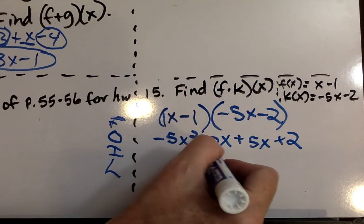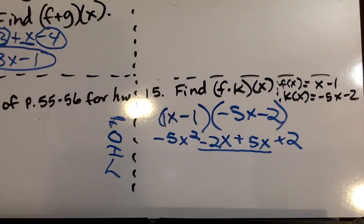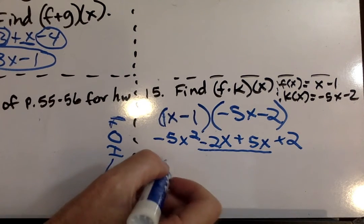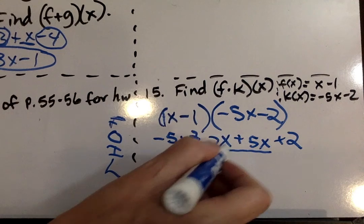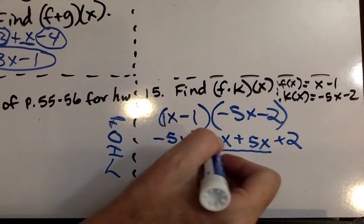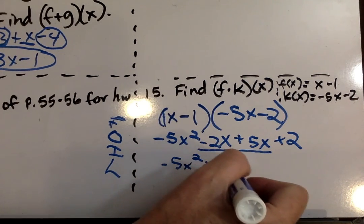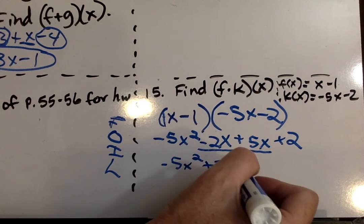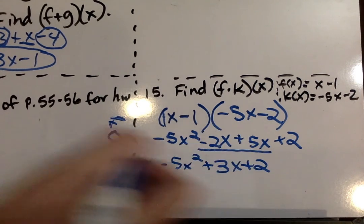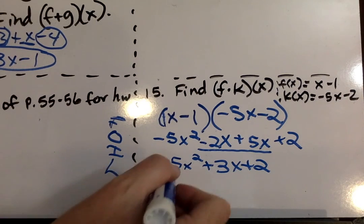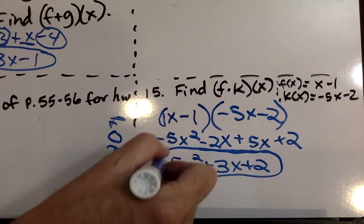I'm going to underline my like terms, which are the ones with x's. This one I leave alone, negative 5x squared. There's no other x squared. Then I go plus, because these are opposites, I have to subtract. But there's more 5 here. So plus 3x and then plus 2. And that's my final answer.